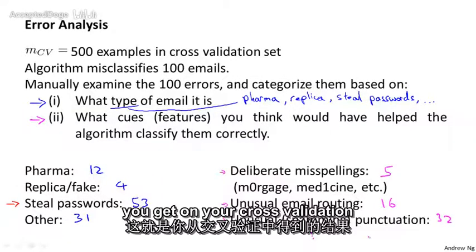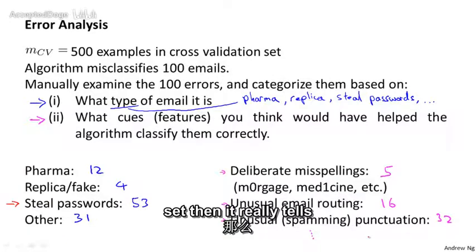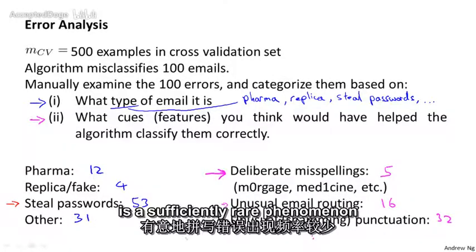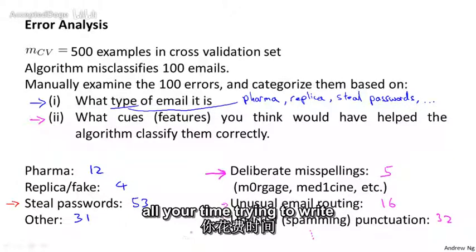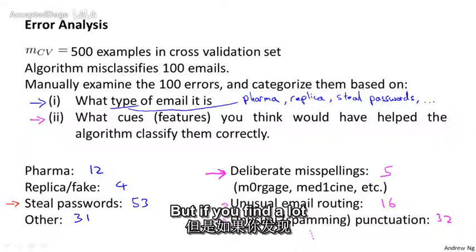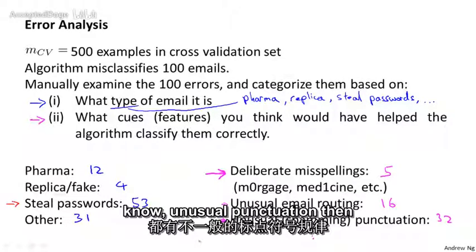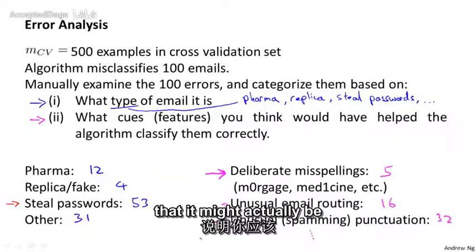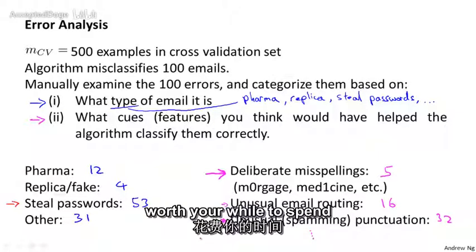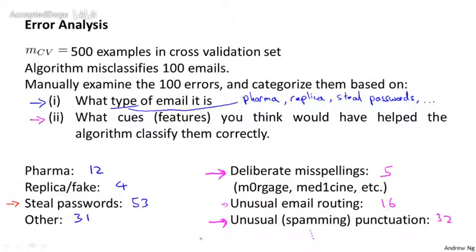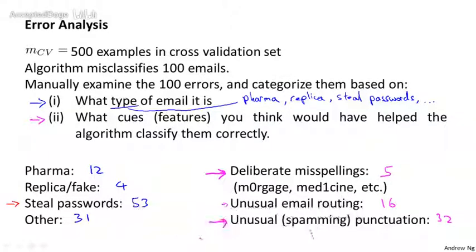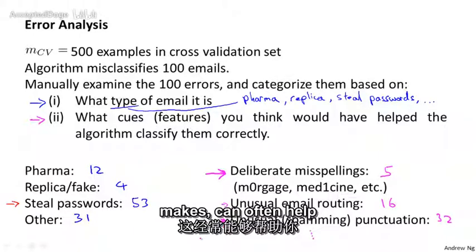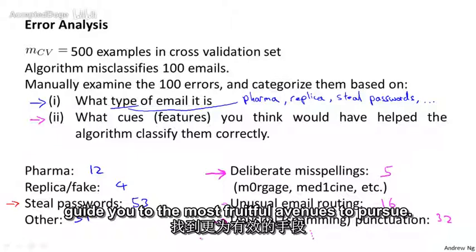And if this is what you get on your cross-validation set, then it really tells you that maybe deliberate spellings is a sufficiently rare phenomenon that maybe it's not worth a lot of time trying to write algorithms to detect that. But if you find that a lot of spammers are using unusual punctuation, then maybe that's a strong sign that it might actually be worth your while to spend the time to develop more sophisticated features based on the punctuation. So this sort of error analysis, which is really the process of manually examining the mistakes that the algorithm makes, can often help guide you to the most fruitful avenues to pursue.